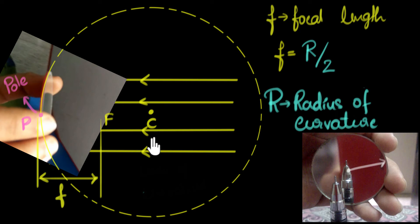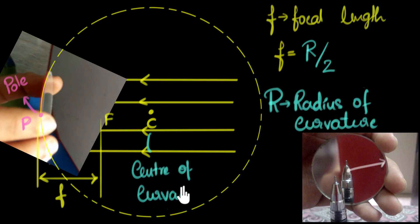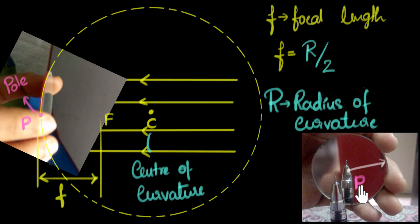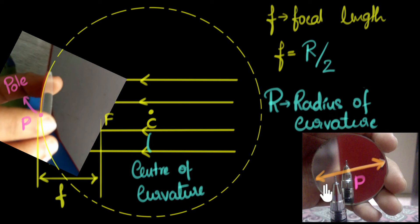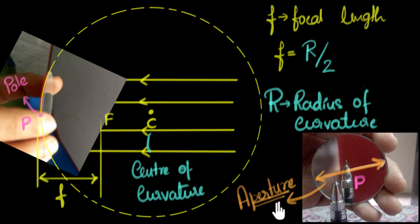This point — the center of the sphere — is also given a name: it's called the center of curvature. Again, if we are given a mirror in our hand, the center we see is not the center of curvature — that's the center of the mirror, which is the pole. To visualize the center of curvature, we have to imagine the sphere of which the mirror forms a part. One more technical term relates to the width or diameter of this mirror, which is often referred to as the aperture of the mirror.